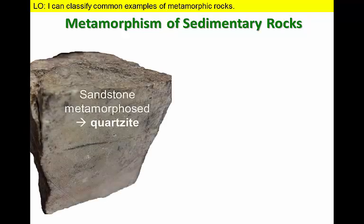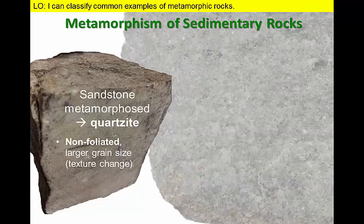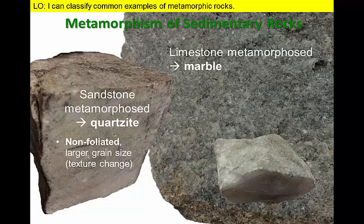For example, relatively pure sandstones are composed almost exclusively of quartz grains. The metamorphism of sandstone just changes the rock texture, forming larger grains in a rock known as quartzite. A similar thing happens in limestone, which is converted to marble. In each case, there may be significant pressures, but the rocks will not develop a foliation.